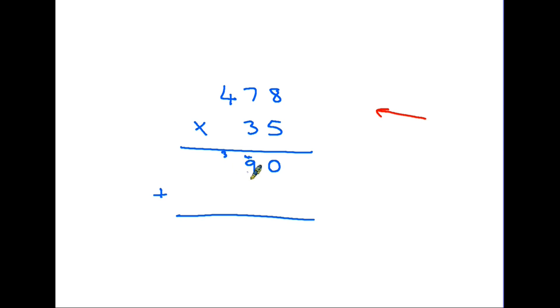We then go 5 times 4—that is 20, add the 3, that's 23. So we did 5 times 8, then 5 times 7, then 5 times 4, and we carried on any digits that we needed to. Now we have multiplied the top row by the 5. From now on, we can forget the 5 because we are moving on to the 3.